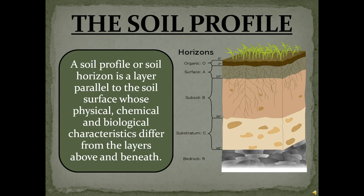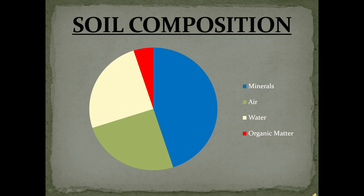A soil profile or soil horizon is a layer parallel to the soil's surface whose physical, chemical, and biological characteristics differ from the layers above and beneath. Soil is mainly composed of minerals, air, water, and organic matter.